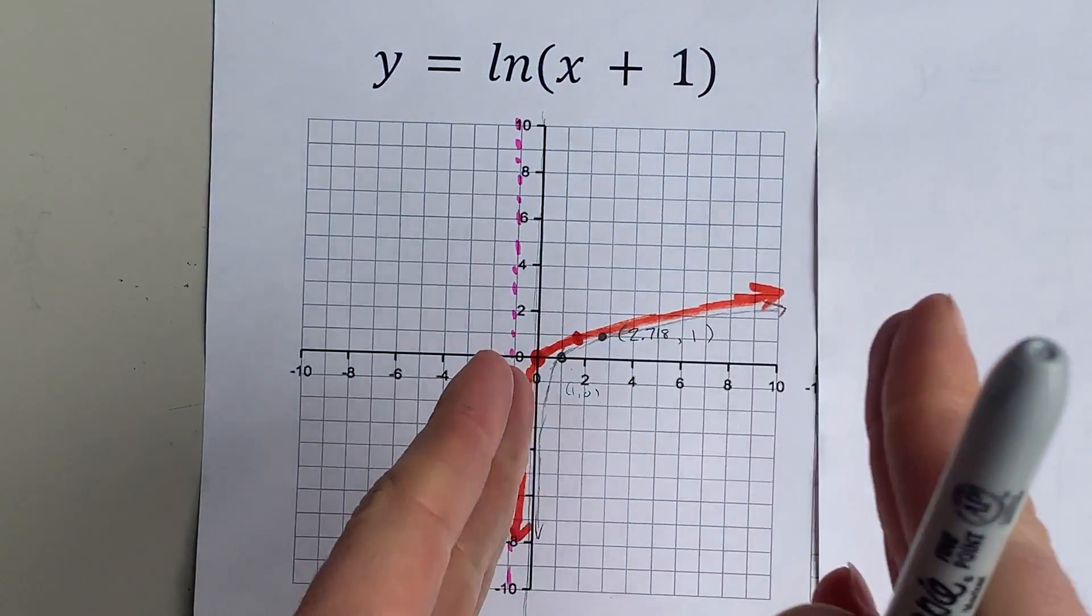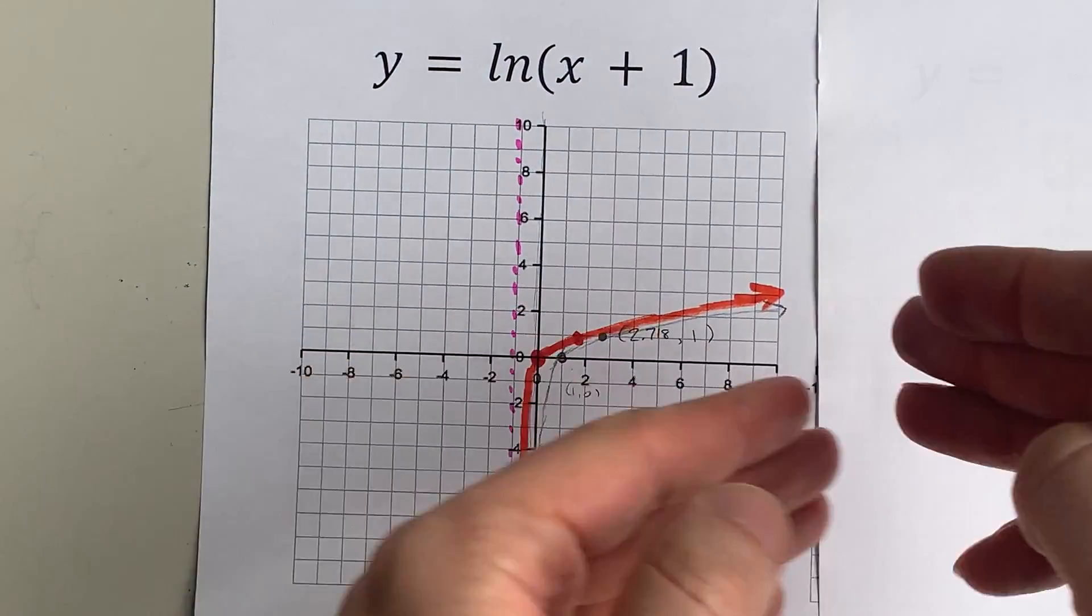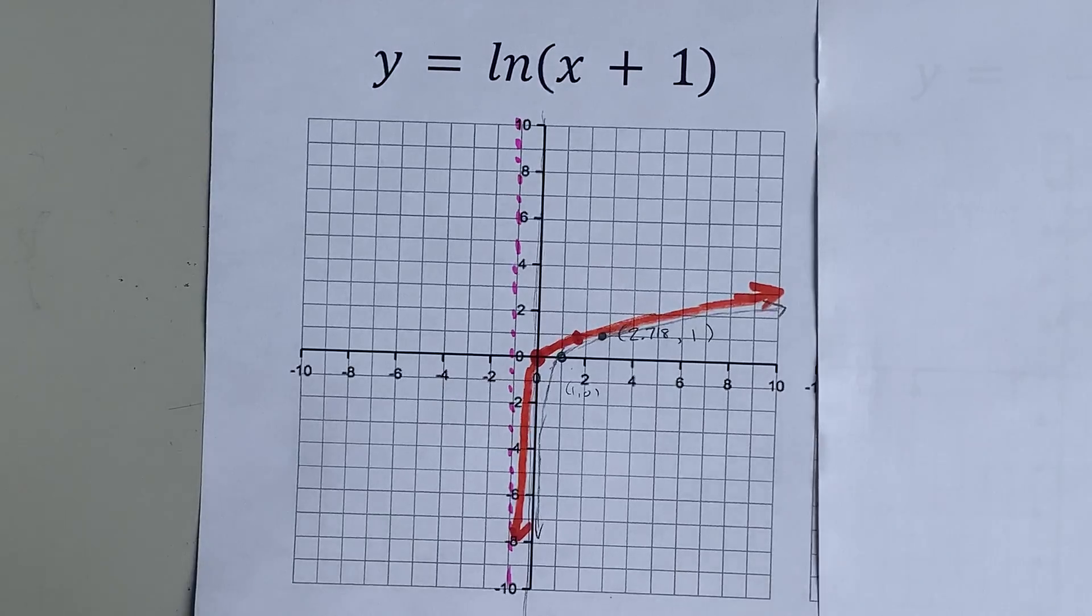You need to go further to the right to go the same amount up each time you iterate. Anyways, this is that graph.